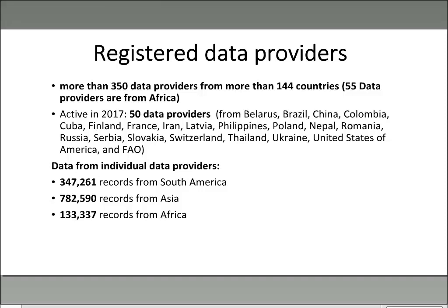In terms of registered data providers, there are more than 350 data providers in AGRIS and 55 of those are from Africa. This is about 16% of data providers coming from Africa. As Africans, we need to contribute more to the portal so that we can increase the visibility of our content through this resource.